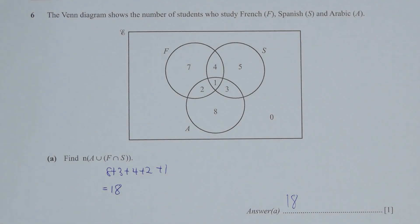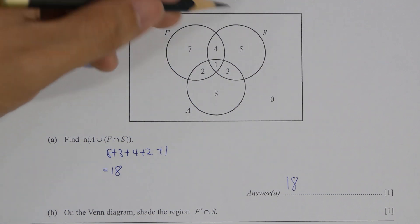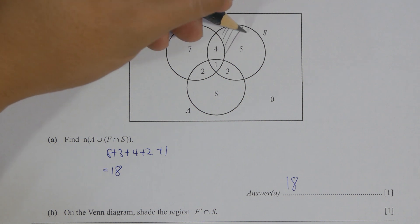And shade the region, everything other than F intersect with S. So this one will be the 5 and 3 area, so it is shaded as above.